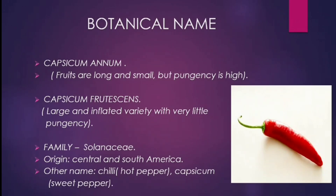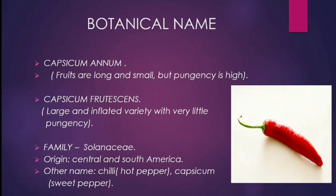It is used in India as the principal ingredient of various curries and chutneys. Botanical name: Capsicum annuum. Fruits are long and small but pungency is high. Capsicum frutescens — large and inflated variety with very little pungency. Family: Solanaceae, origin: Central and South America. Other names: Chilli hot pepper, Capsicum sweet pepper.